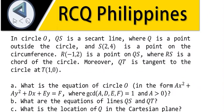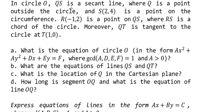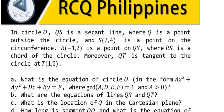Hello everybody, today I will talk about calculus and geometry. The question is from RCQ Philippines. In circle O, we have QS as a secant line where Q is a point outside the circle, S at (2,4) is a point on the circumference, R at (-1,2) is a point on QS where RS is a chord of the circle, and QT is tangent to the circle at T(1,0). So we need to draw the circle.